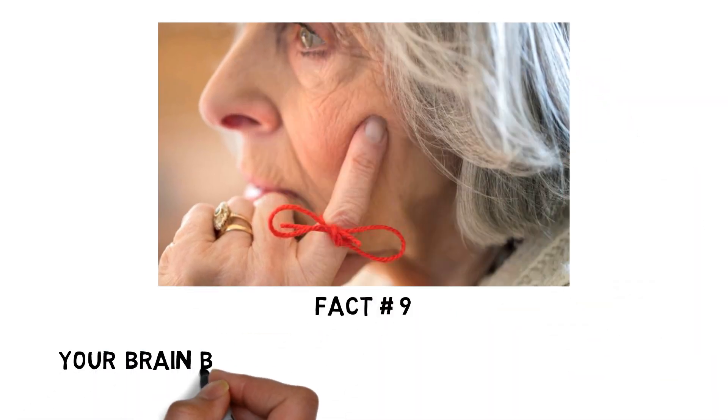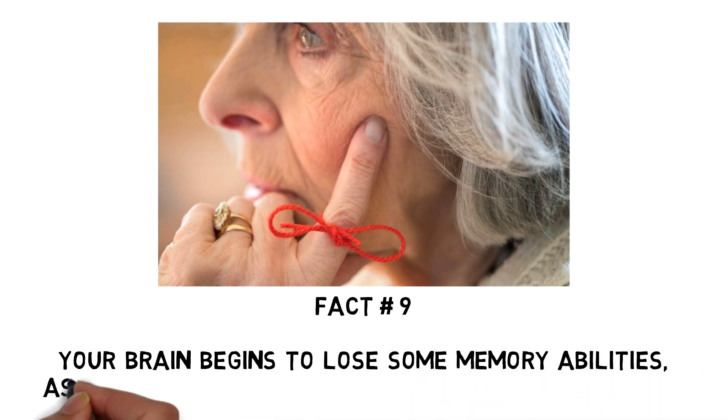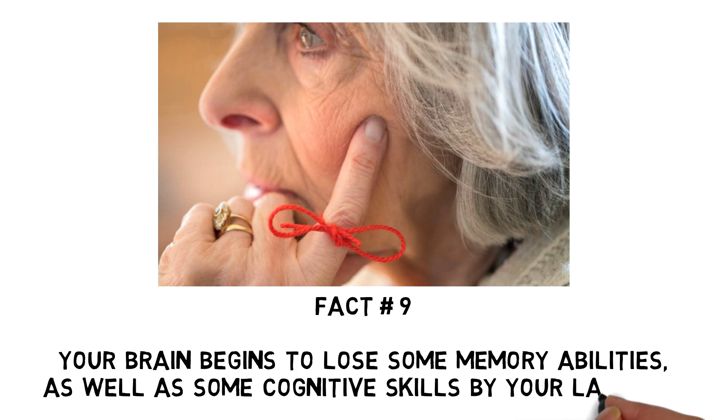Fact number 9: Your brain begins to lose some memory abilities, as well as some cognitive skills by your late 20s.